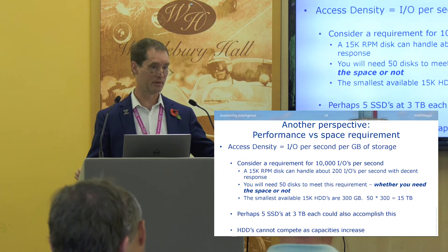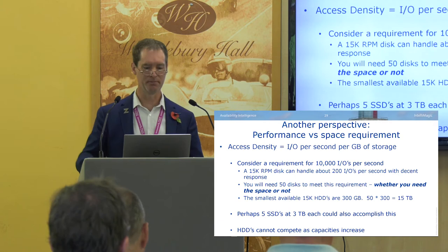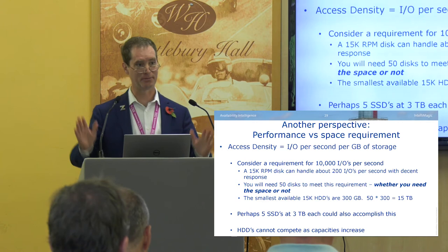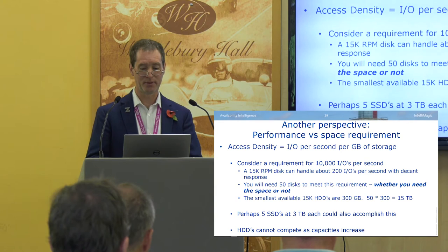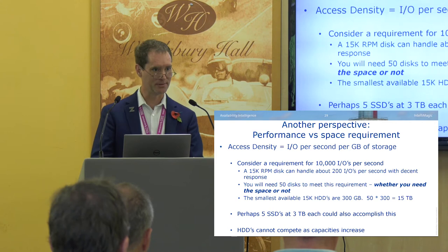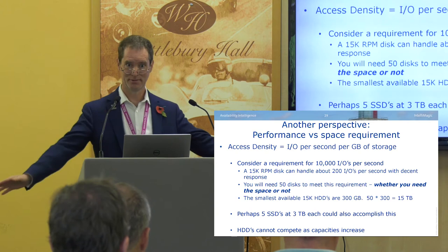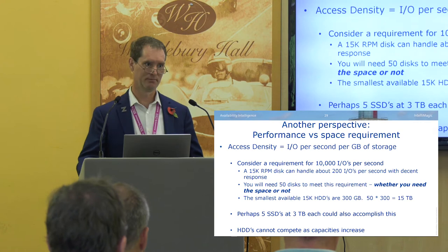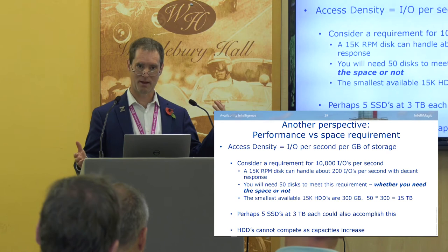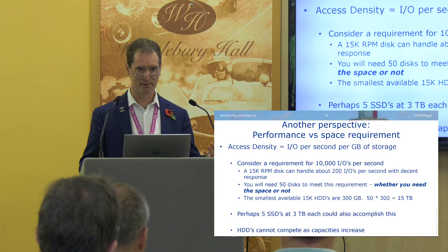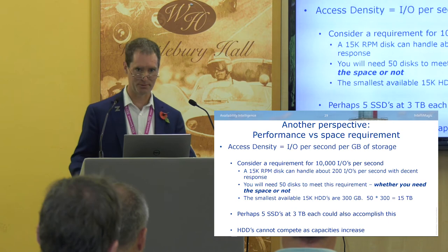If I'm going with spinning disk at 15K RPM, I can do about 200 IOs per second and maintain decent performance before seeing a queue. That means I need 50 disks whether I need the space or not. Maybe my application only needs 2 terabytes but I need 10,000 IOs per second, so I'm stuck buying 50 drives at 300 gig each - 15 terabytes, probably half empty. Or I could buy a few flash drives, SSDs at 3 terabytes each. Getting back to the Seagate gentleman, I don't see how spinning disks can compete at this level when flash drives can do thousands of IOs per second without that fundamental mechanical limitation.